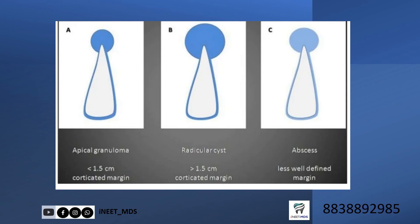Apical granuloma, radicular cyst, and abscess: periapical granuloma and abscess clinically present with the same signs and symptoms and it is quite difficult to differentiate — even radiographically. A small finding: an abscess has a slightly ill-defined margin, whereas a granuloma has a neat, well-defined margin, though not always a corticated margin. A radicular cyst will definitely have a corticated margin and the size is larger.